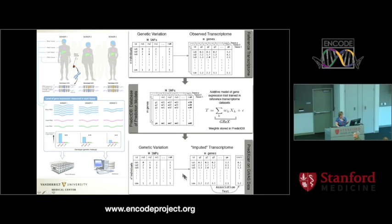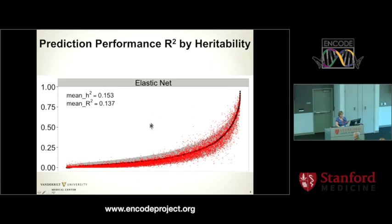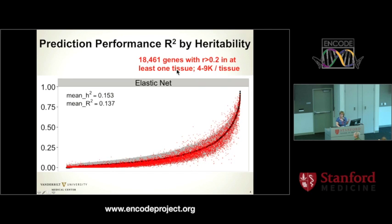We use GTEx as a reference panel to build prediction equations and create a large database — for each gene in each tissue, all the SNP predictors that come into the prediction equation with their associated weights, using Elastic Net for building the predictions. Once created, in any dataset where we just have genome variation — GWAS level or whole genome sequencing — we can essentially impute transcript levels for each gene in each tissue and associate that calculated endophenotype with traits of interest. In any given tissue, about 4,000 to 9,000 genes have high-quality prediction, but across all GTEx tissues we're getting high-quality prediction in about 18,000 genes.